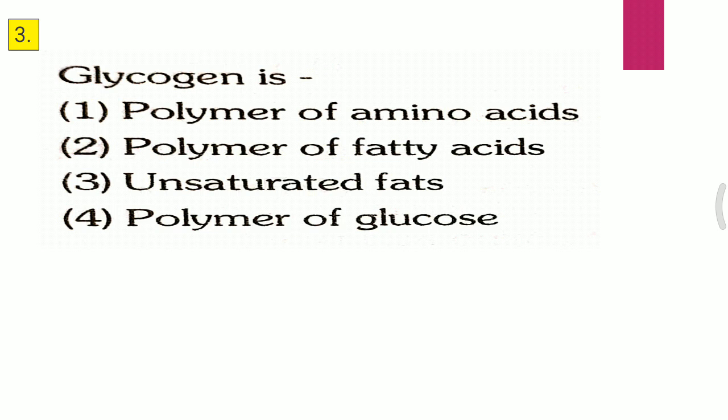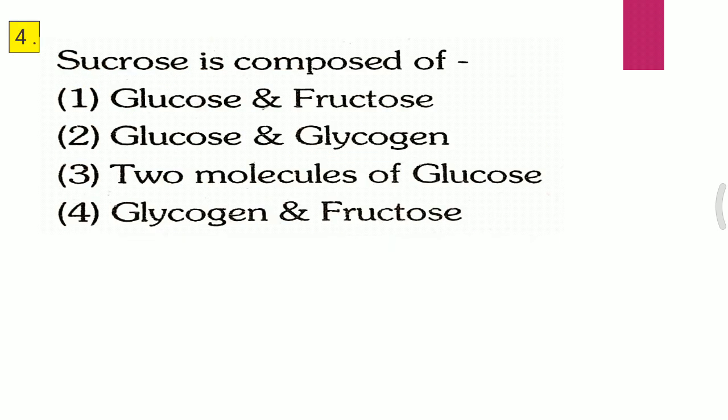Question three: Glycogen is — first, polymer of amino acid; second, polymer of fatty acid; third, unsaturated fat; fourth, polymer of glucose. The correct answer is the fourth one, that is polymer of glucose.